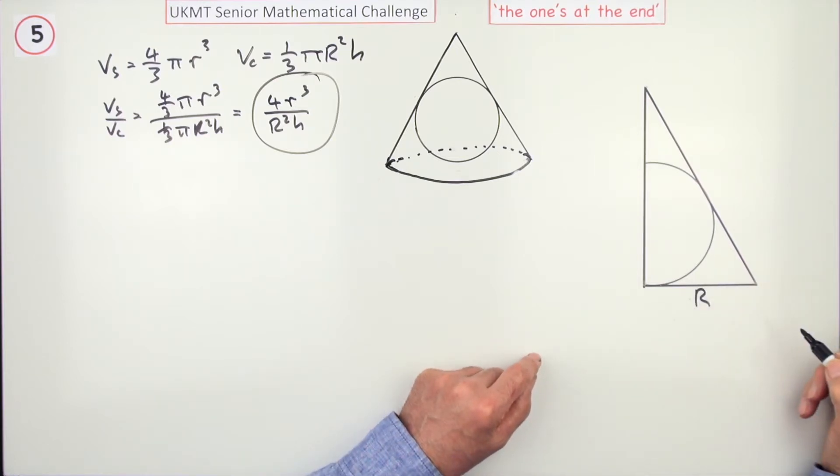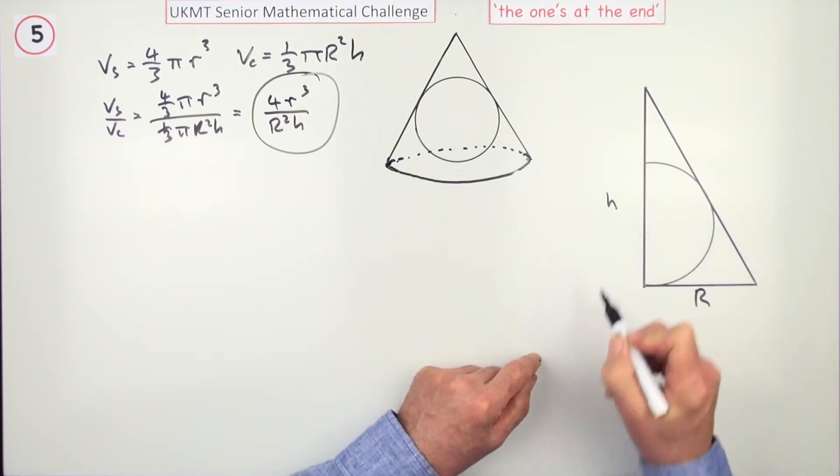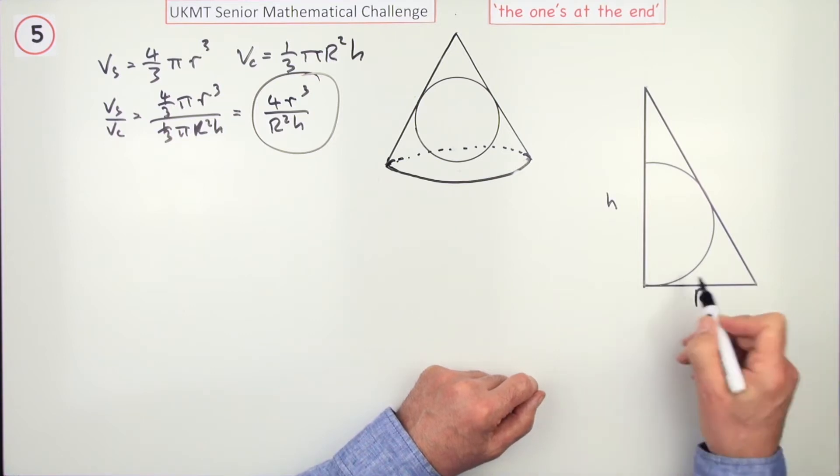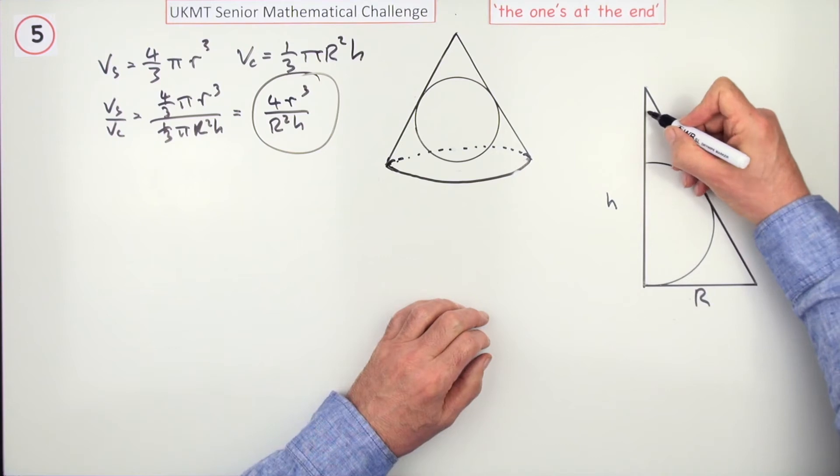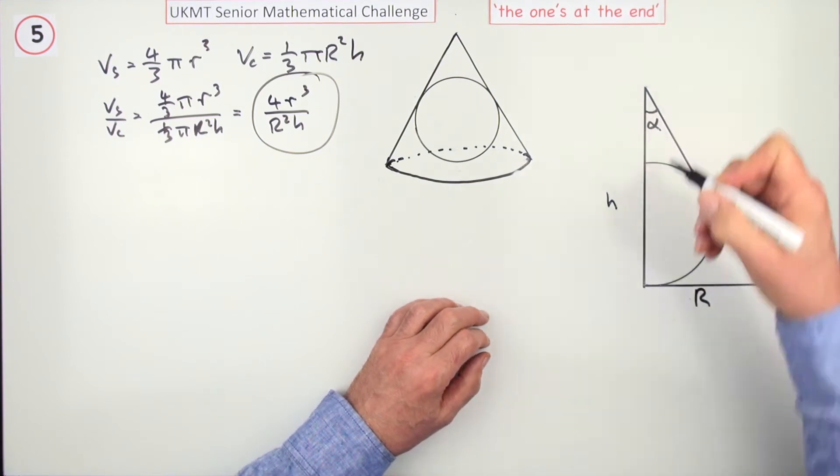That will be the radius of the cone, this will be the height of the cone. There's a nice little right-angled triangle, and if that angle was 2α, this angle in here will simply be α.